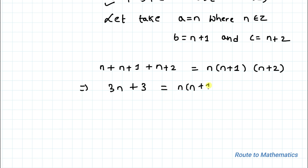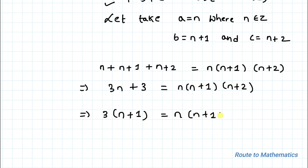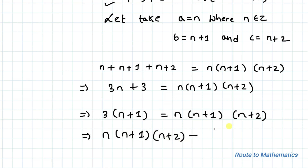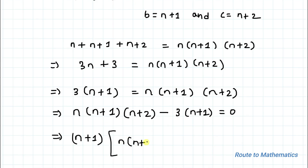Taking 3 common on the left side gives 3·(n+1) equals n·(n+1)·(n+2). Bringing all terms to one side: n·(n+1)·(n+2) minus 3·(n+1) equals 0. Taking (n+1) as a common factor gives (n+1)·[n·(n+2) minus 3] equals 0.